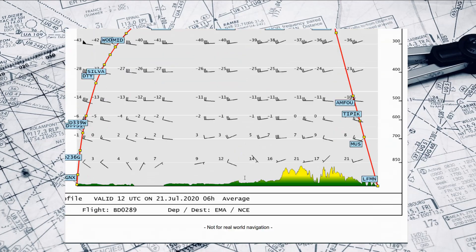Last but certainly not least, we have the en route terrain. You can see there is some high terrain towards the end of the flight. These are shown as flight levels — so flight level 50 — and that MORA we just spoke about, terrain plus an additional safety margin, was around 8,000 feet. But as I mentioned, we do have some more terrain on the descent into Nice.